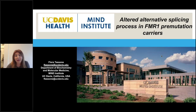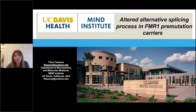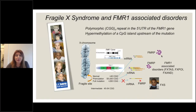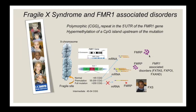Alternative splicing is a regulated process that occurs during gene expression and gives rise to biodiversity, meaning that multiple proteins can be generated by a single gene. The genome we're going to talk about is the FMR1 gene.